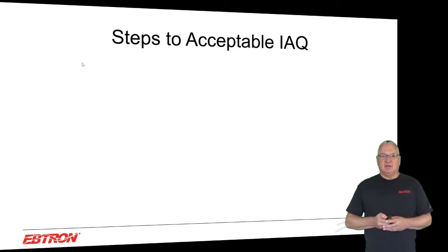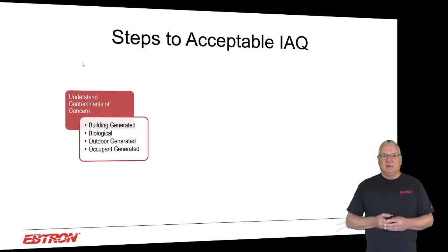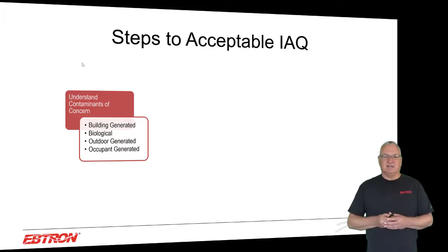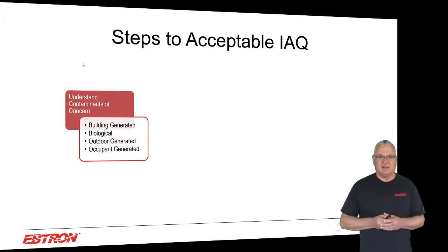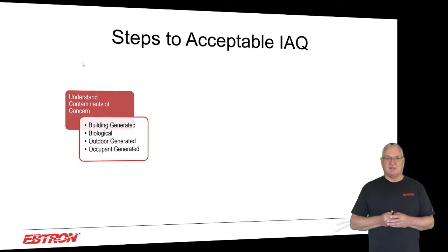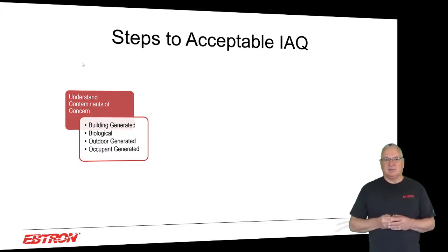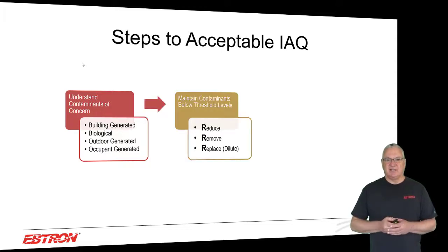When we look at steps to acceptable indoor air quality, we need to have a basic understanding of the contaminants of concern. There's building generated, there's biological, there's outdoor generated, and there's occupant generated. And what can we do about it?